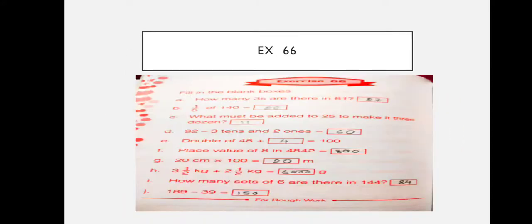Next: how many sets of 6 are there in 144? If we divide 144 by 6, we get 24. No problem there. The next one is a subtraction — you all can do that.